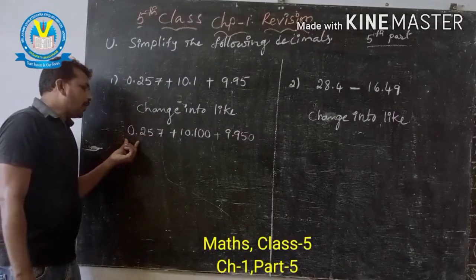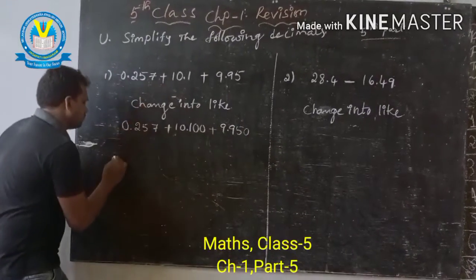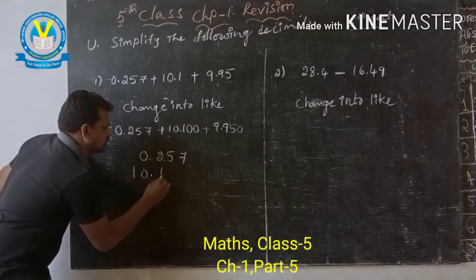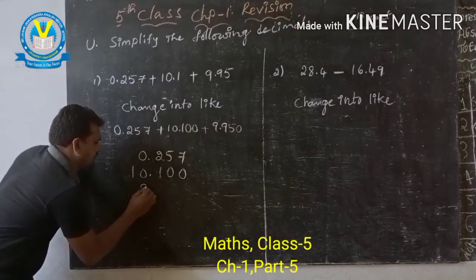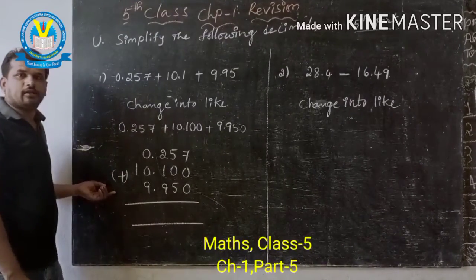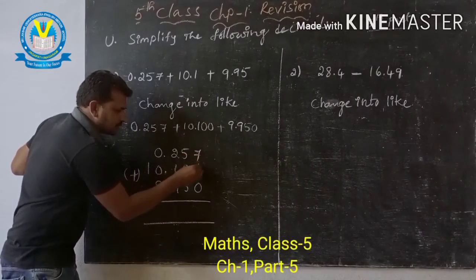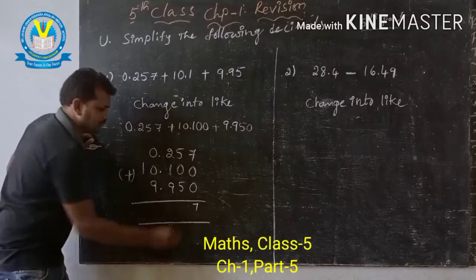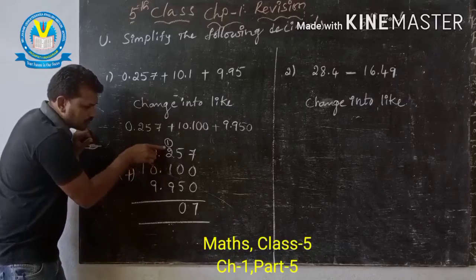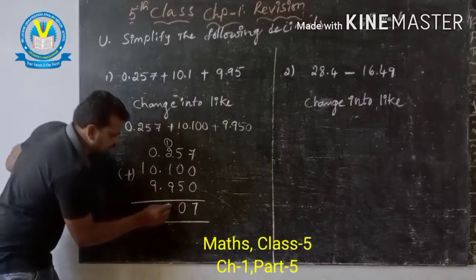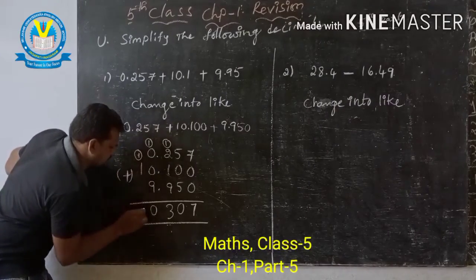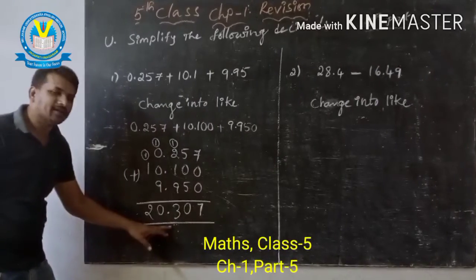Now look — point after three places, all are equal. So now addition: 0.257, 10.100, 9.950. The addition symbol is plus. 7 plus 0 plus 0 is 7. 5 plus 0 plus 5 is 10 — write 0, carry 1. 2 plus 1 is 3, plus 1 is 4, plus 9 is 13 — write 3, carry 1. Then 1 plus 9 is 10, carry 1. So the answer is 20.307.